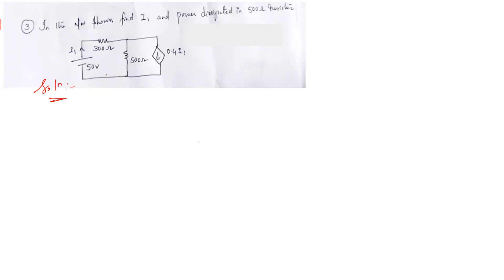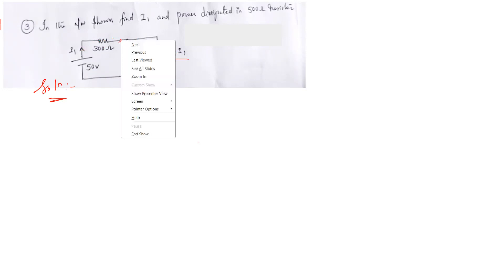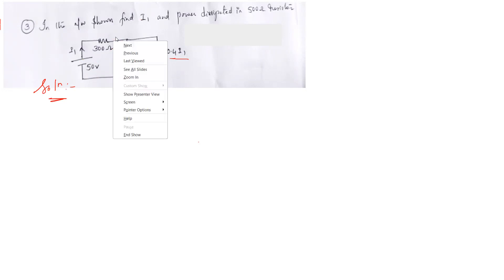First we need to find the value of I — the current in this resistor. This is the total current I1, as given in the question it is 0.4 I1. So the total current I1 is coming to this point and getting divided between these two branches.